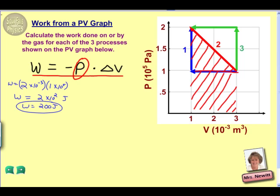For process 2 then, we're going to have the area of our 200 joules. That 200 joules is what we already found for this portion of the graph. And then we'll be adding on the triangle that is on top of that. Formula for area of a triangle is 1 half base times height. So 1 half, our base is from 3 to 1 times 10 to the negative third cubic meters. So that again would be 2 times 10 to the negative third.